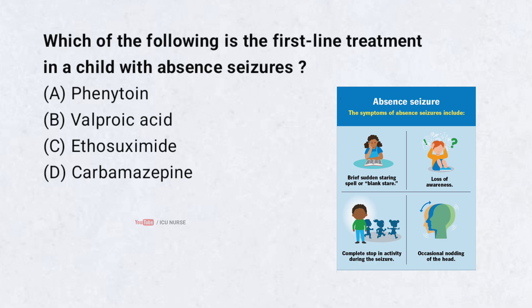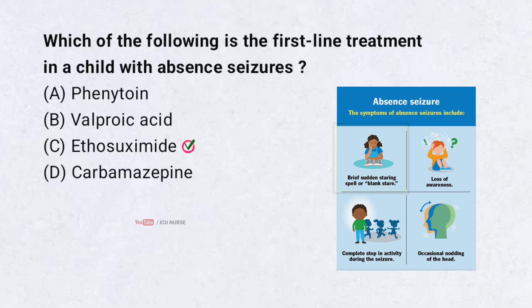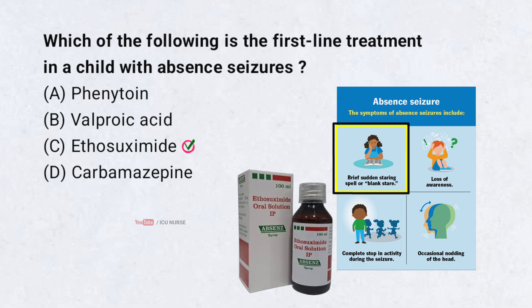Which of the following is the first-line treatment in a child with absence seizures? A. Phenytoin, B. Valproic acid, C. Ethosuximide, D. Carbamazepine. Correct answer: C. Ethosuximide. Absence seizures are brief episodes of staring and unresponsiveness. Ethosuximide is the drug of choice for typical absence seizures. It is well-tolerated and effective in most cases.